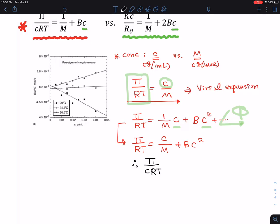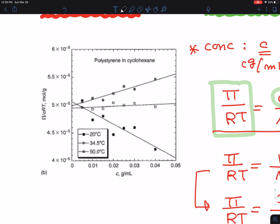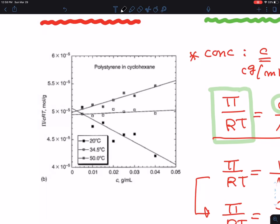So π/CRT is a common choice, so your y-intercept is 1/M and the slope is B when you plot C versus π/CRT. This shows an example of actual results when people do the experiment. When you dissolve polystyrene - this is a well-known system where Professor Paul Flory did experiments. Paul Flory won the Nobel Prize in establishing this concept about polymer solution thermodynamics in the 1970s. His favorite system was polystyrene dissolved in cyclohexane.